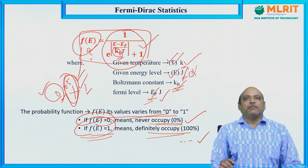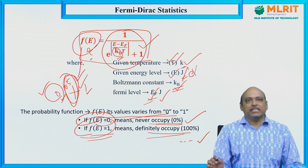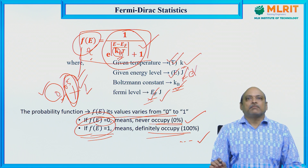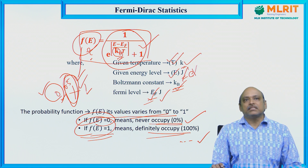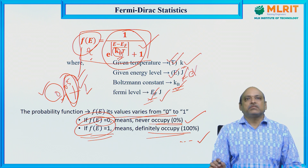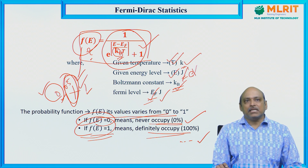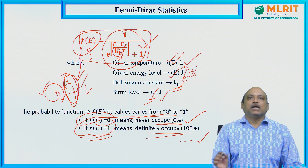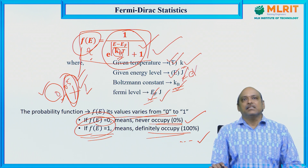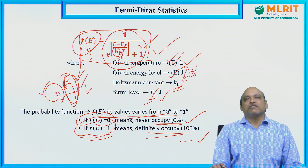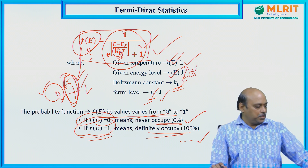I am now taking several situations where the given energy level E is below the Fermi energy level, above the Fermi energy level, and at the Fermi level itself — assuming the system temperature is 0 degree Kelvin and above 0 degree Kelvin — to calculate the Fermi Dirac probability function value.